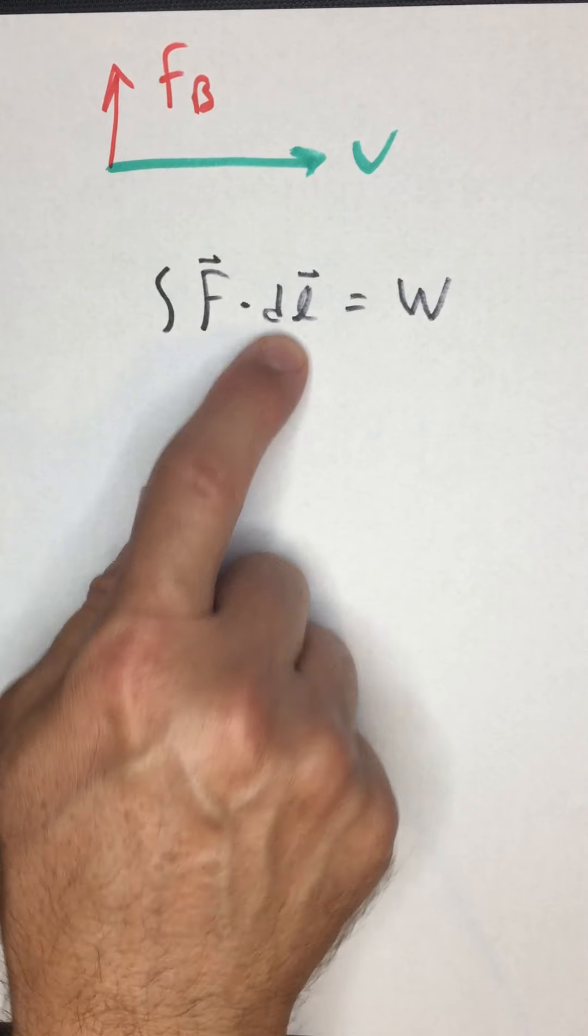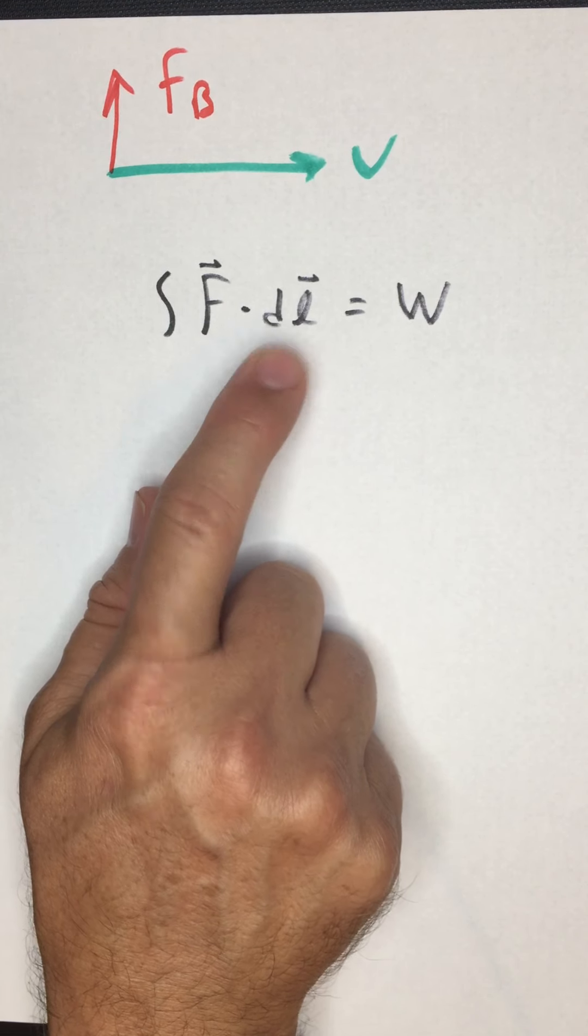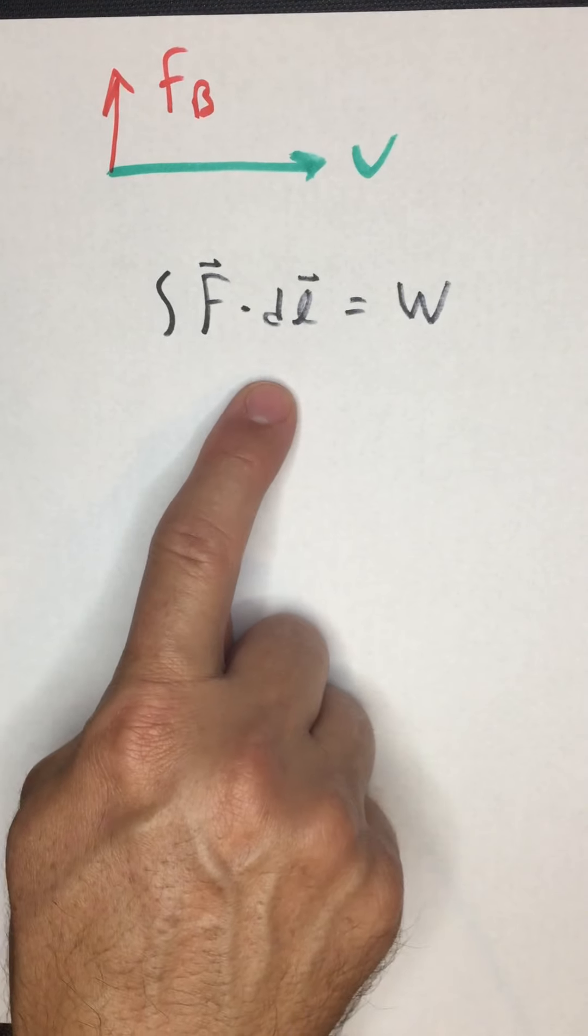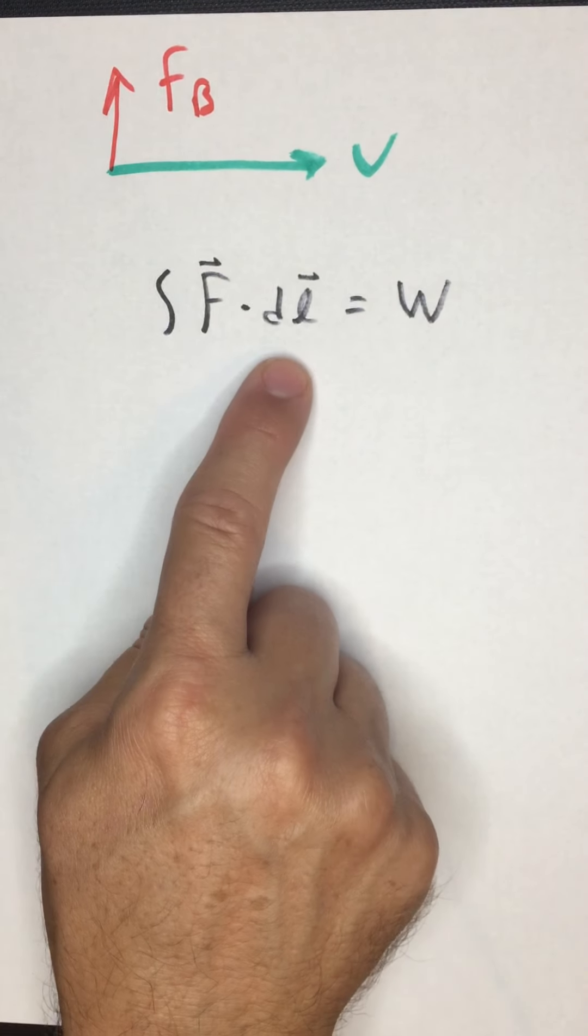That is to say V and DL are always parallel. They have to be. That's just how the universe works. If you're moving in a certain direction, your velocity is pointed in that direction.